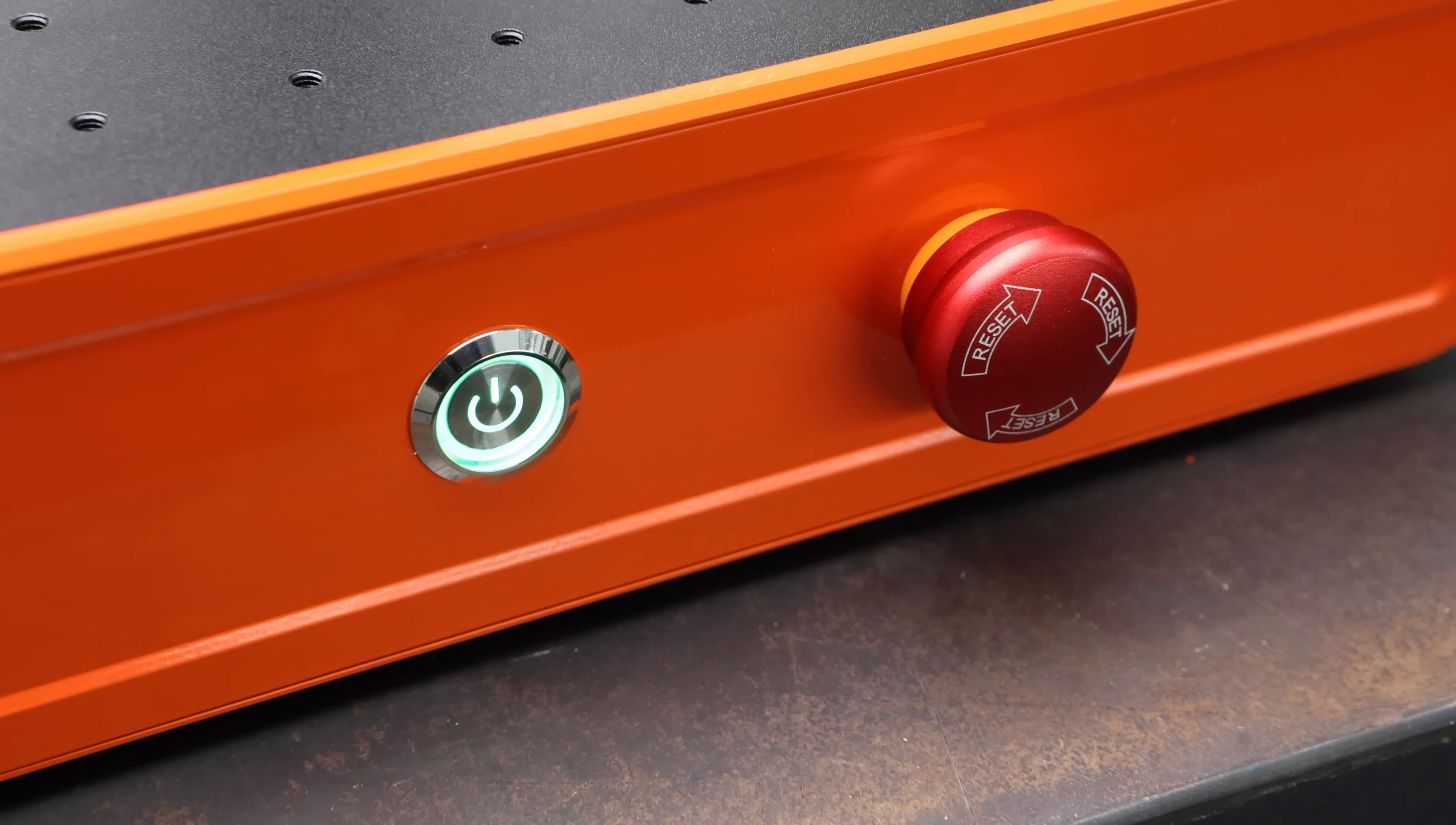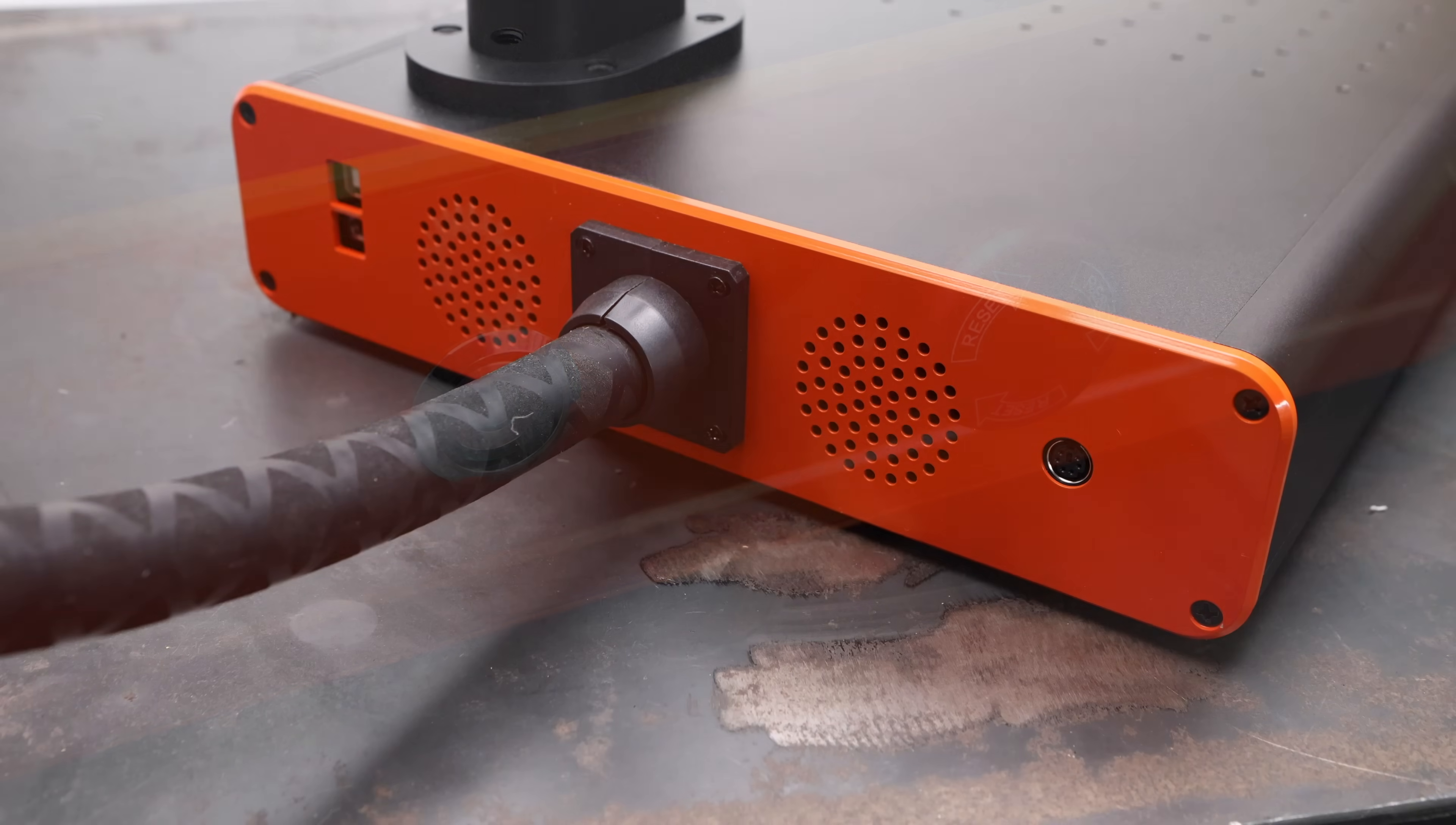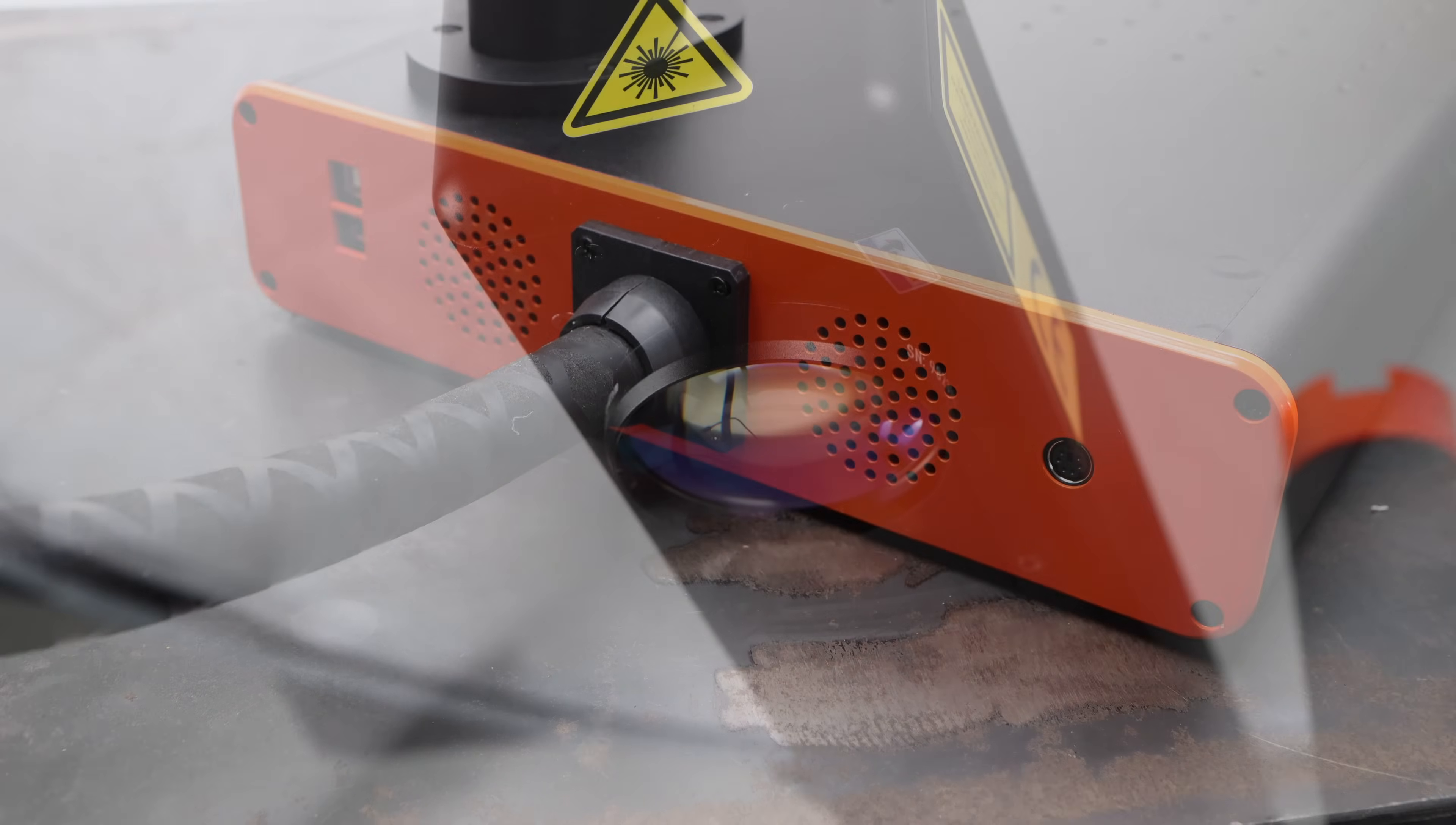The front of the machine has two buttons, one power button and an emergency stop. The rear of the machine has a USB port, a power port and a port for an optional rotary attachment which I don't happen to have.